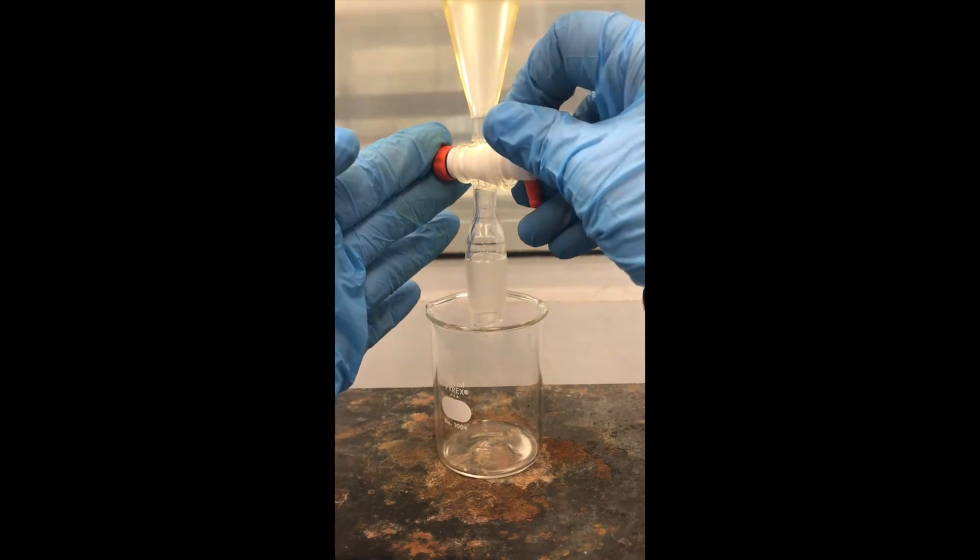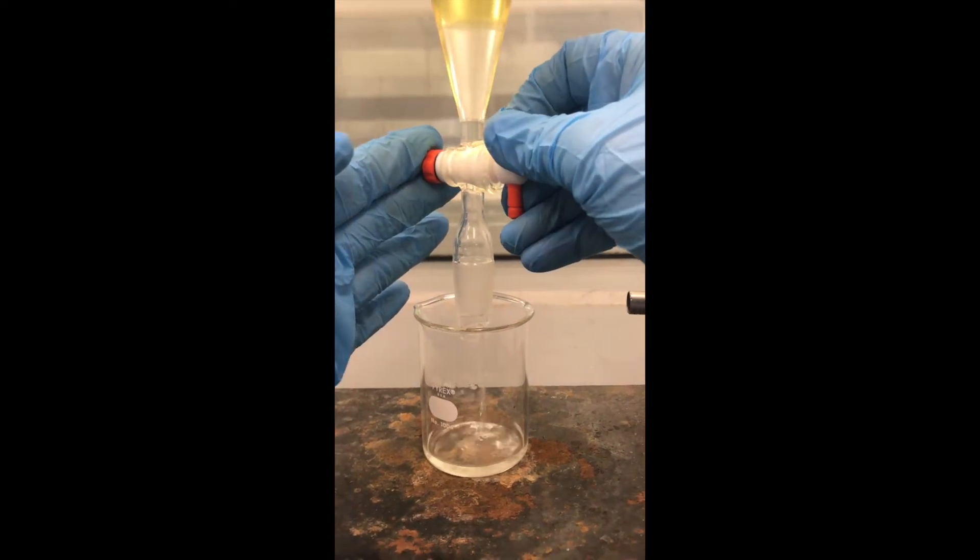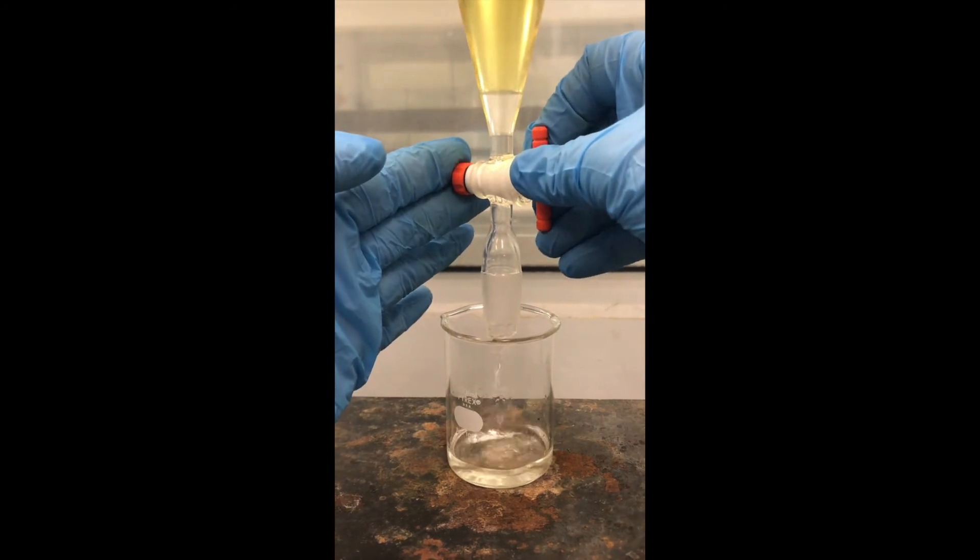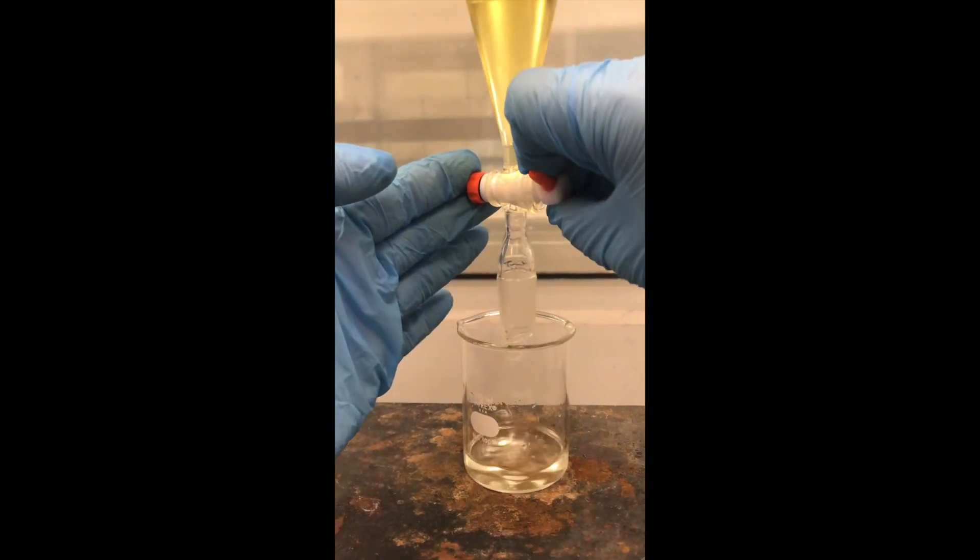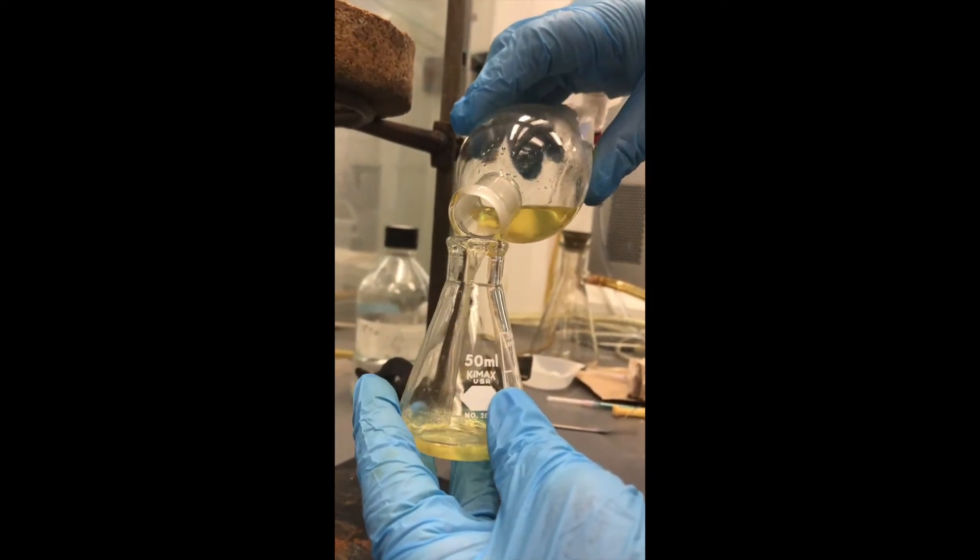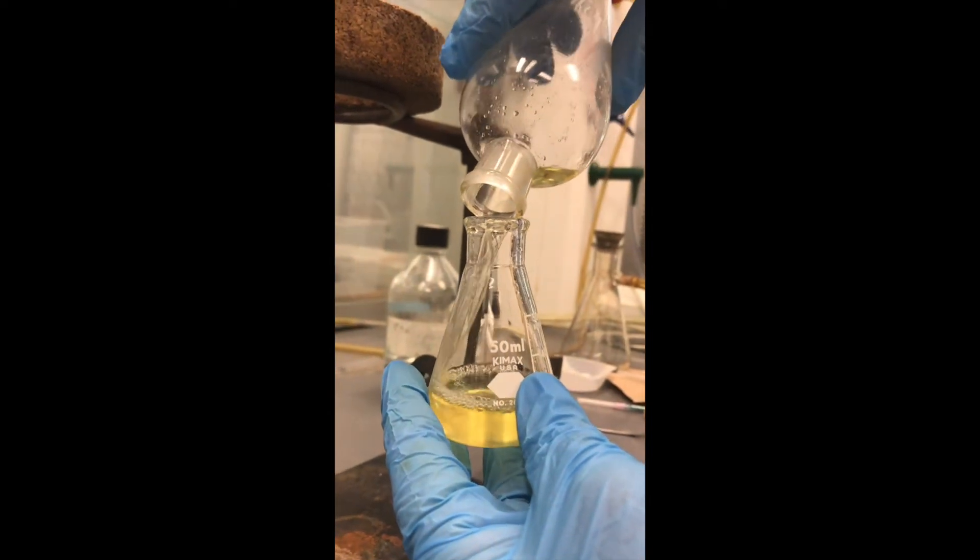During my extraction, I will pull off the aqueous layer through the bottom of the funnel. Remember, my product is in the ether. I am going to need to save this aqueous layer to wash it one more time with the ether. I am also going to save the ether layer, but this time I am going to pour it out of the top of the funnel to avoid contamination with the aqueous at the bottom of the funnel.